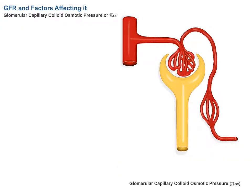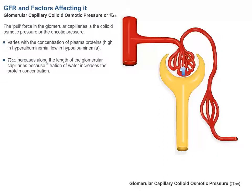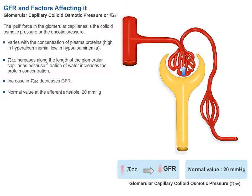Glomerular capillary colloid osmotic pressure, or PI-GC, is the pull force in the glomerular capillaries, also called the oncotic pressure. It varies with the concentration of plasma proteins — high in hyperalbuminemia and low in hypoalbuminemia. PI-GC increases along the length of the glomerular capillaries because filtration of water increases the protein concentration. An increase in PI-GC decreases GFR. Normal value at the efferent arteriole is 20 mmHg.